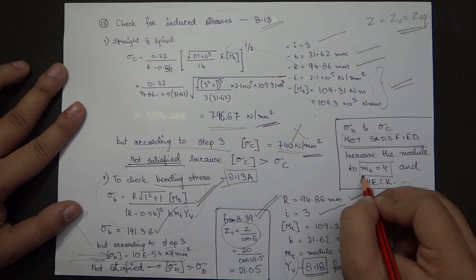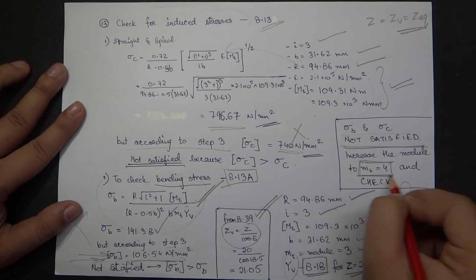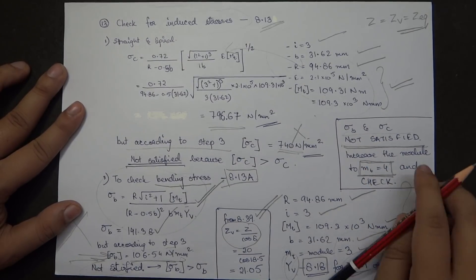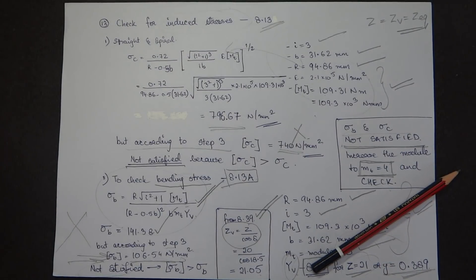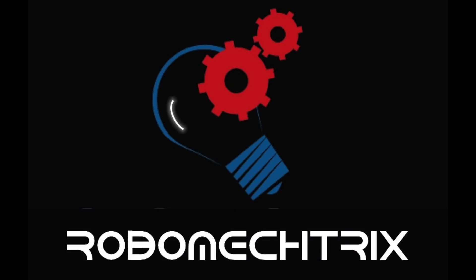Both the compressive and bending stress conditions are not satisfied, so the module must be increased to 4. If time is limited, one can simply state that increasing the module to 4 gives the desired values. Stay tuned for the video on the design of bevel gears by the Lewis and Buckingham method.